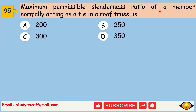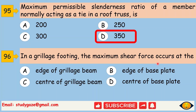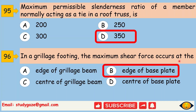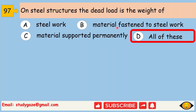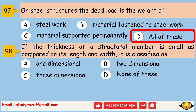Maximum permissible slenderness ratio of a member normally acting as a tie in a roof truss is 350. Next, in a grillage footing, the maximum shear force occurs at the edge of base plate. Next, on steel structures, the dead load is the weight of all of these: steel works, material fastened to steel work, and material supported permanently. Next, if the thickness of a structural member is small as compared to its length and width, it is classified as two-dimensional.